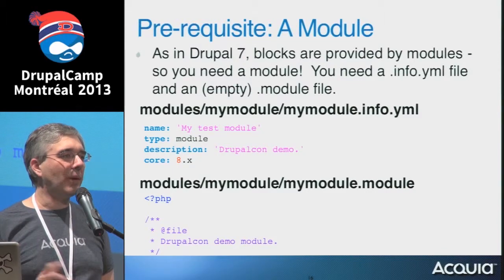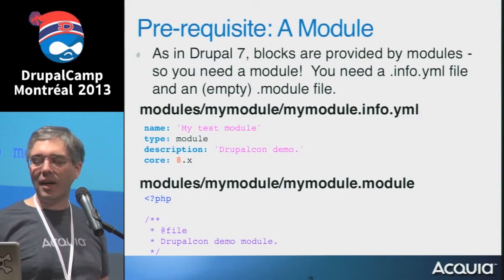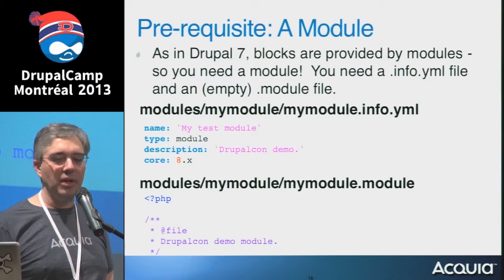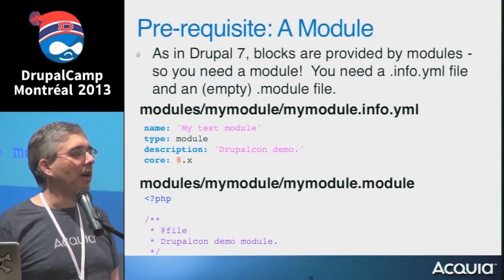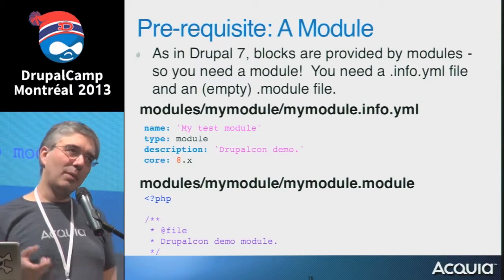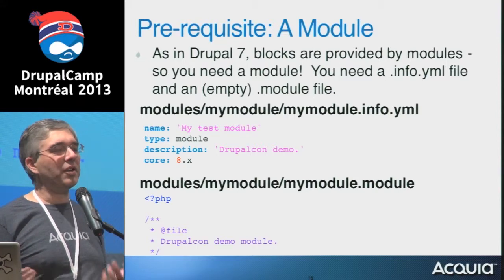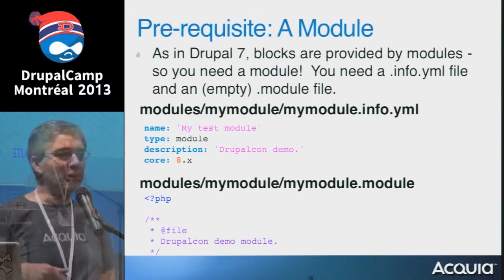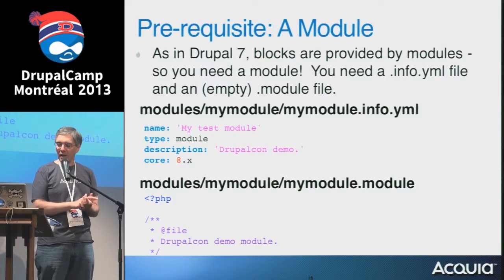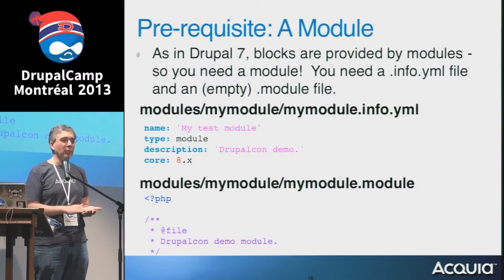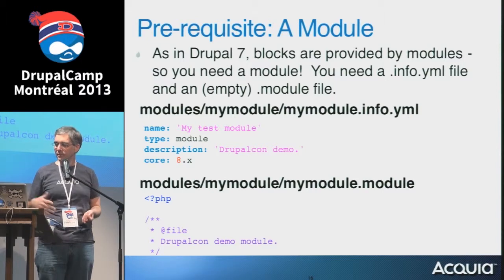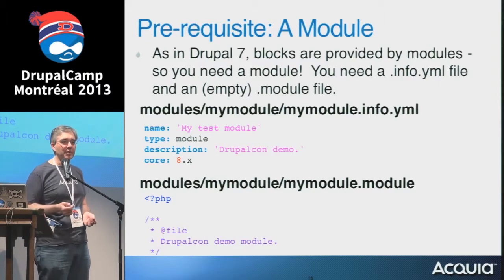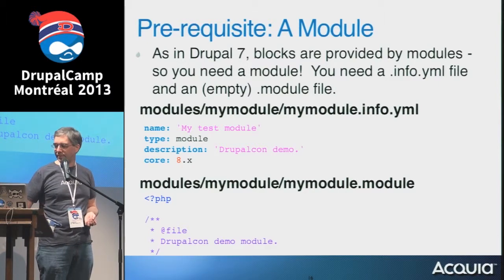A prerequisite is that you need a module — nothing works without a module in Drupal. Writing a module in Drupal 8 is almost equivalent to Drupal 7 for the minimum you need: an info file and a module file. In Drupal 8, the info file is a YAML file (.info.yaml). You could basically convert one-to-one from your Drupal 7 info file by replacing equal signs with colons and bumping the core version to 8. You still need at least an empty PHP file or your module won't be found. In my example module, it literally starts as just an empty PHP file.